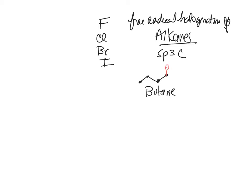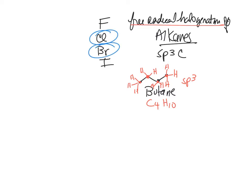What is the hybridization of each one of these carbons? Sp3. Carbon likes four bonds. So if this carbon is bonded to two carbons in the chain, it has two hydrogens. The molecular formula is C4H10. These are alkanes. If we do free radical halogenation, we are putting either chlorine or bromine on one of these carbons, and you're going to learn about selectivity.